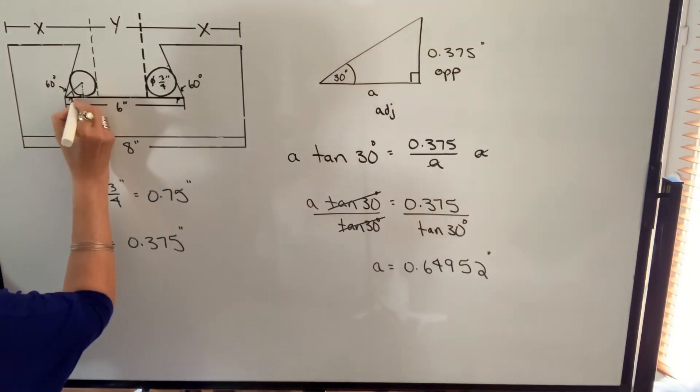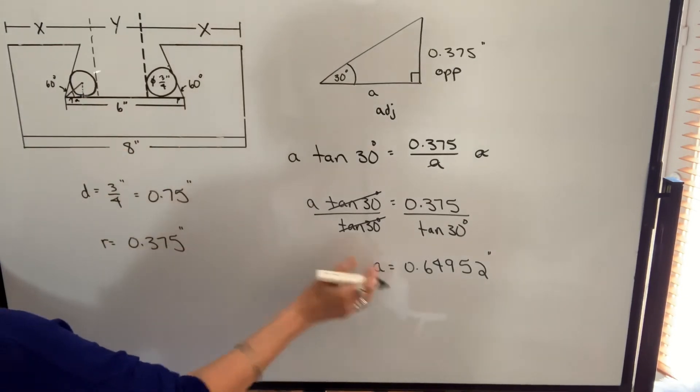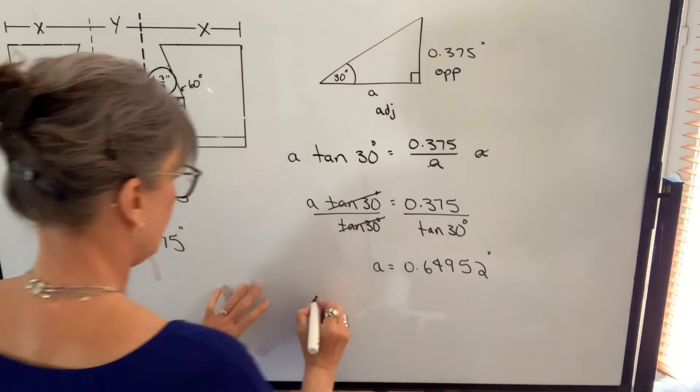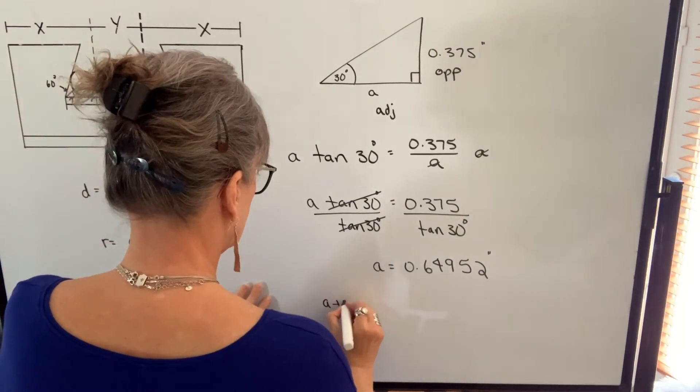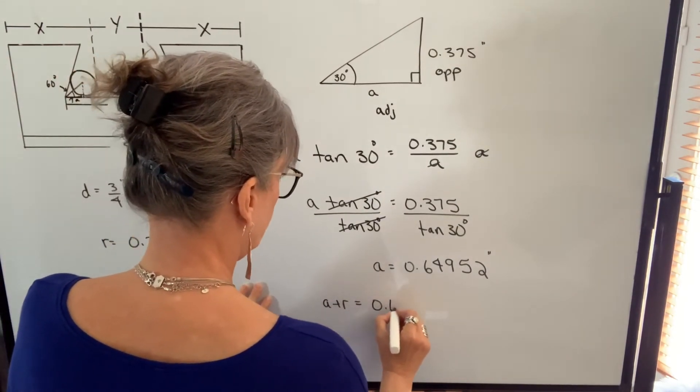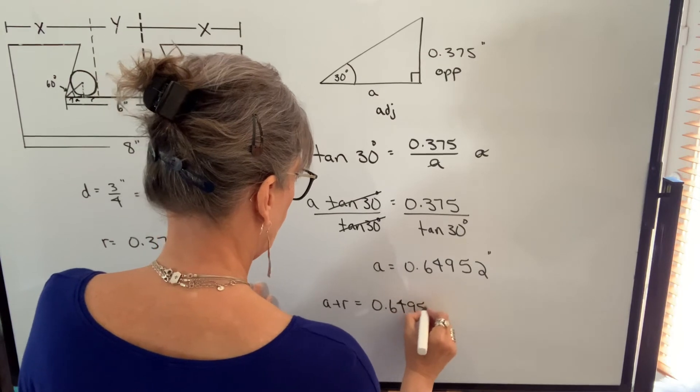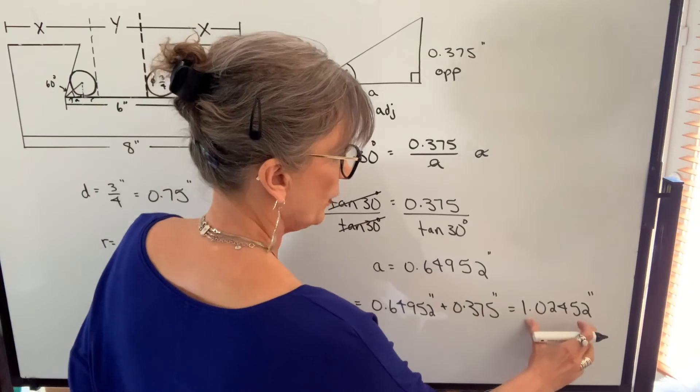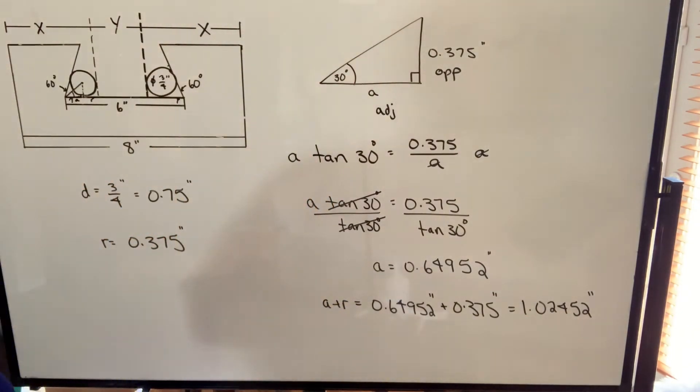So I know this distance A is this. If I add that to R, that's going to give me this whole distance. So A plus R, the radius, will be 1.02452 inches.